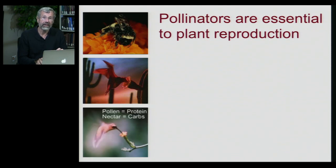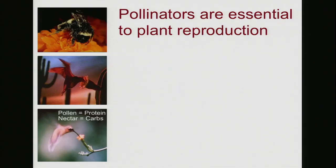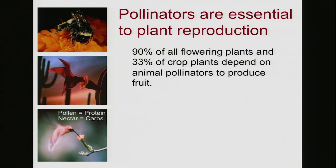A classic case of mutualism is pollination. Pollinators are essential to the reproduction of flowering plants, whether they be bees, bats, or birds. The birds, bats, and bees receive pollen, which is a protein food source, and they also get nectar, which is a valuable source of carbohydrates. So the pollinators benefit from going to the flowers, and the plants require these pollinators.